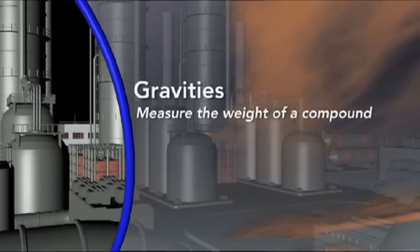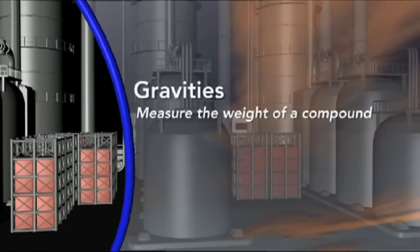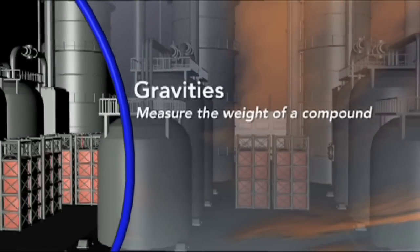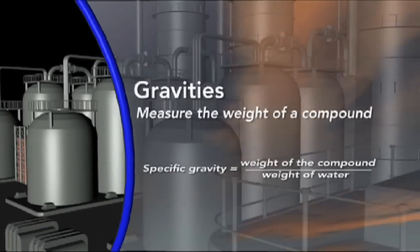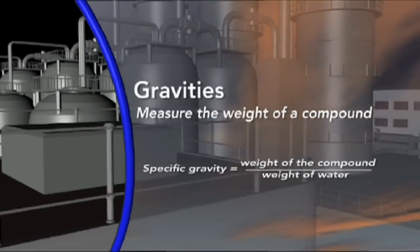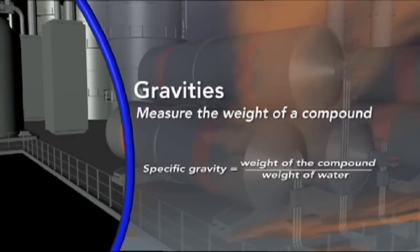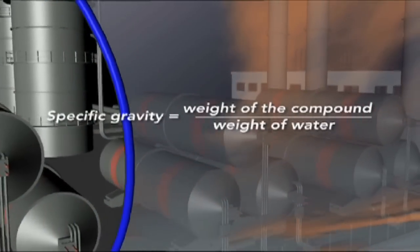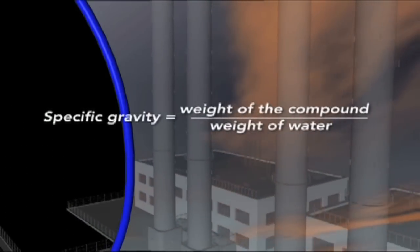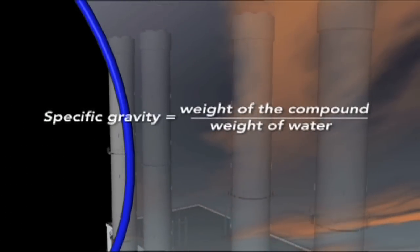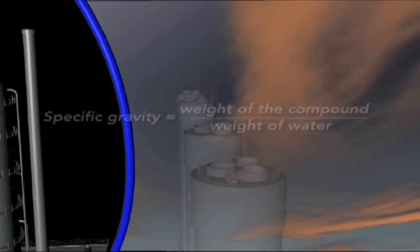Gravity measures the weight of a compound — another important crude oil characteristic. A chemist would use a measure called specific gravity, which relates everything to water. The specific gravity of any liquid is equal to the weight of some volume of that compound divided by the weight of the same volume of water, all at standard pressure and temperatures. Of course, the chemist's approach must have been too simple for petroleum engineers.